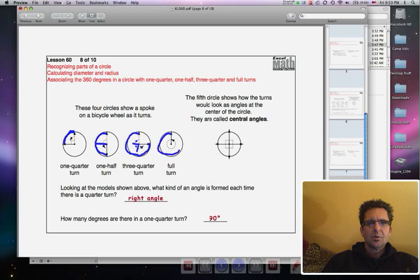And then when it goes all the way back to the beginning, that's a full turn. And a full turn has four right angles in it. And so they're asking you what the sum of those are, and that would be 360 degrees. It says, look at the model shown above. What kind of angle is formed each time there is a quarter turn? And each time there is a quarter turn, there's a right angle formed. And how many degrees are there in a quarter turn? There's 90 degrees in each quarter turn.